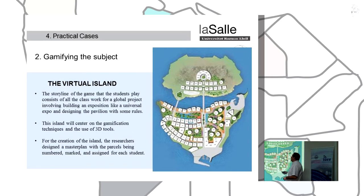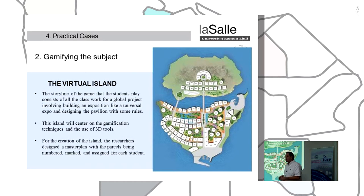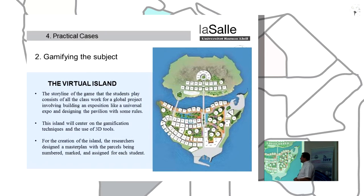They can make an evaluation and assessment: which is the best house, which is the best model, which has the best illumination, and which is better overall. The island is created using gamification techniques and 3D tools. Each student is assigned a plot number and location on the island.